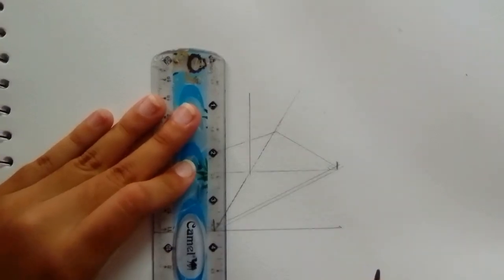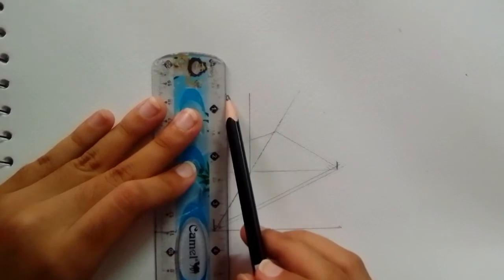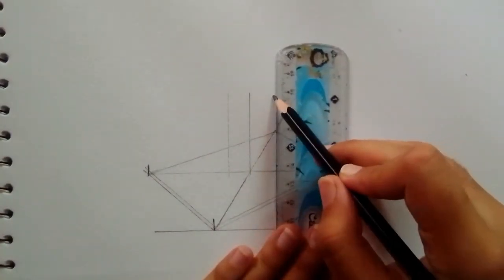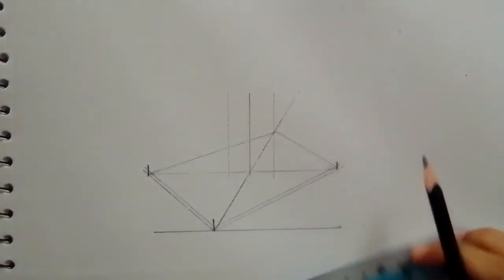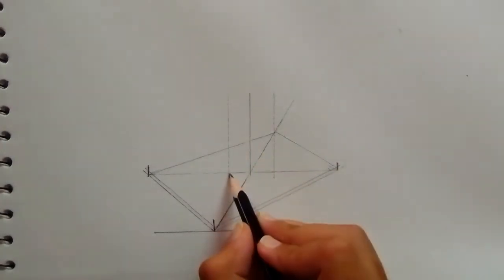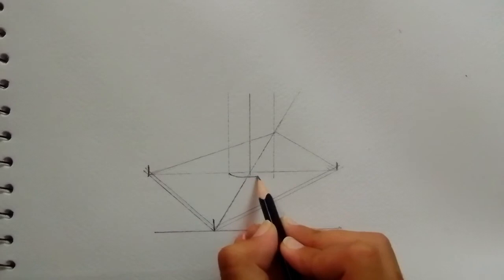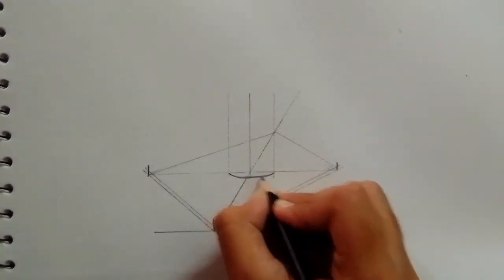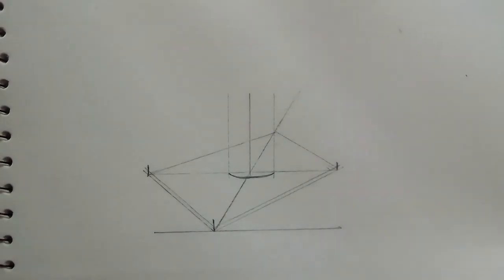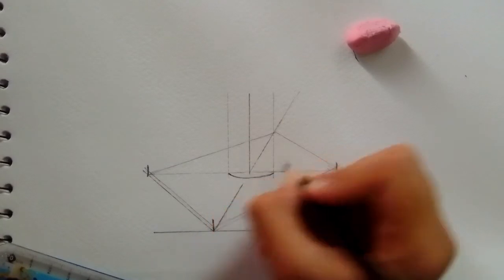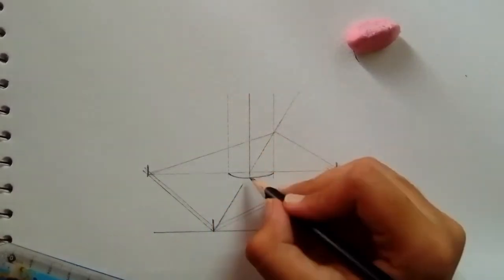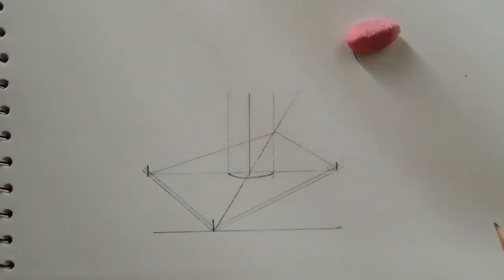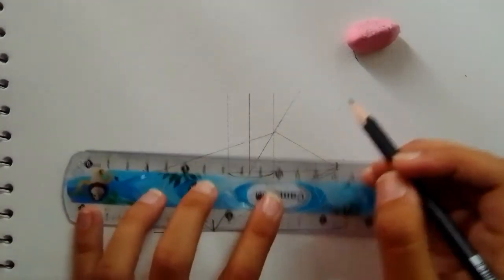Now time for the tin. Draw two lines on each side of the middle line. Now attach these two lines with the curved line.